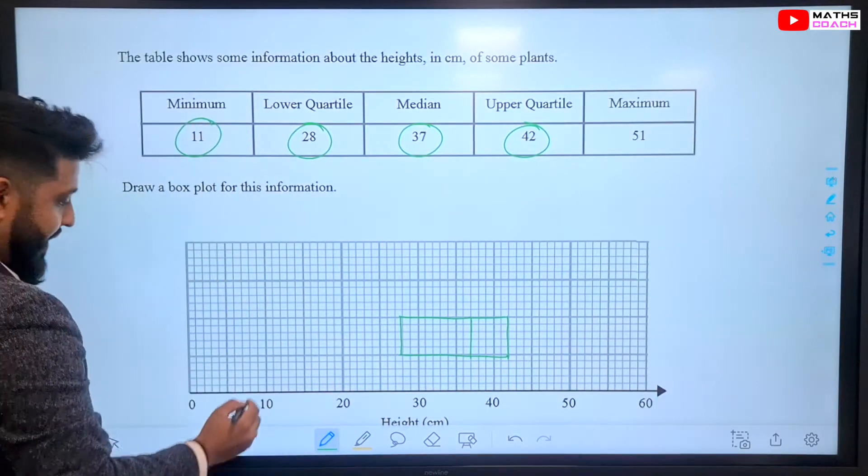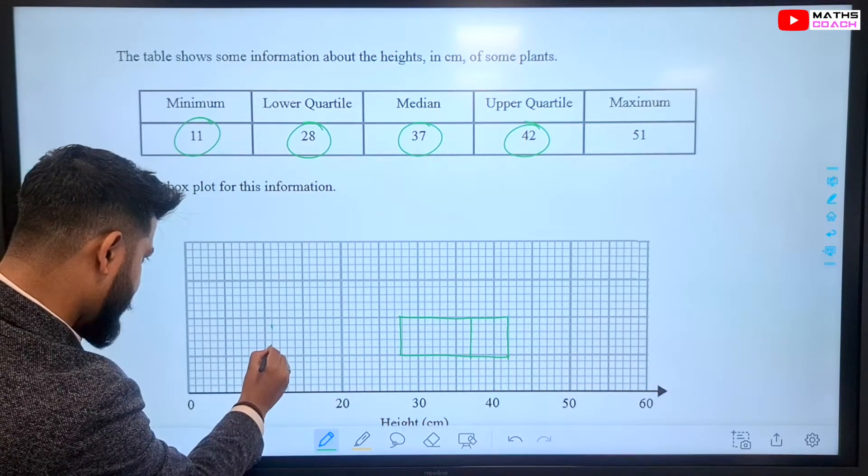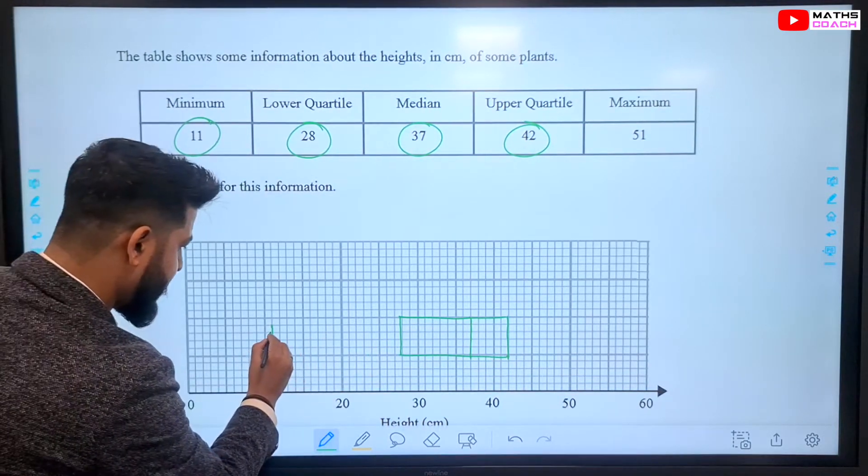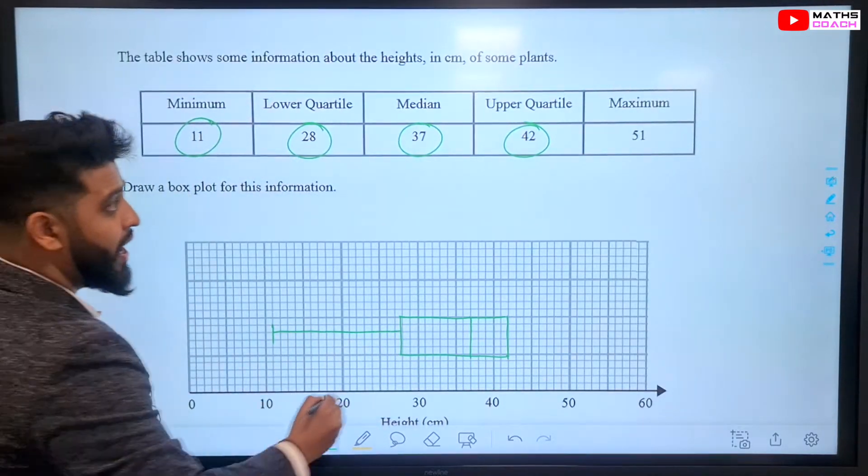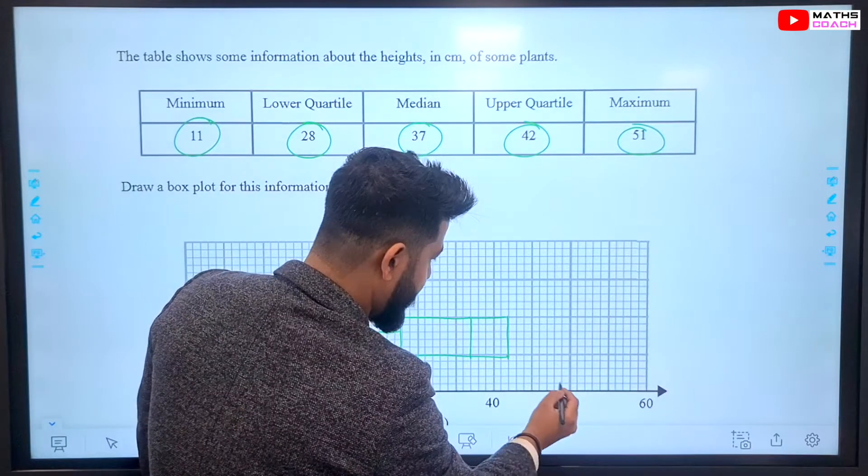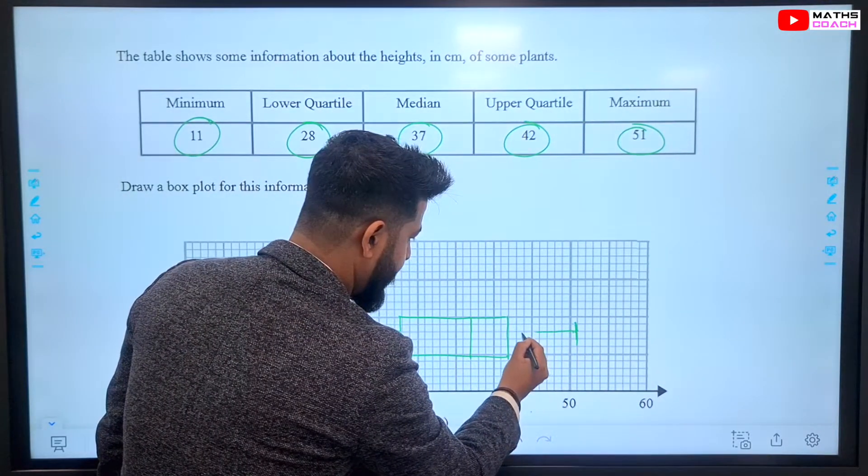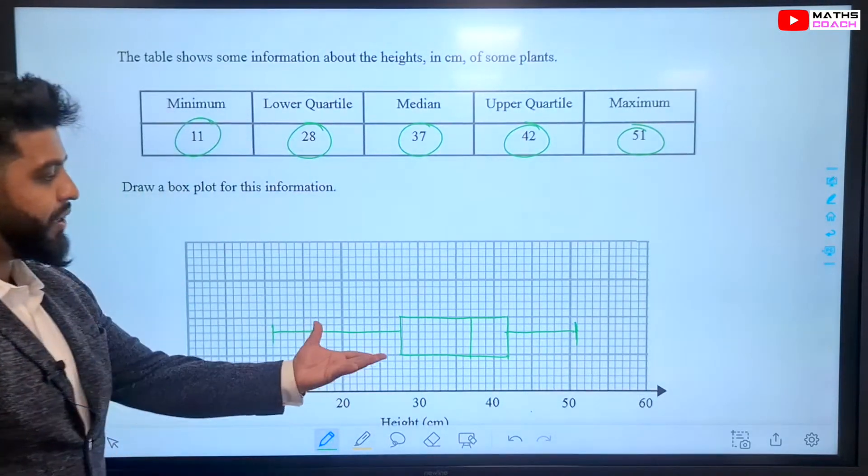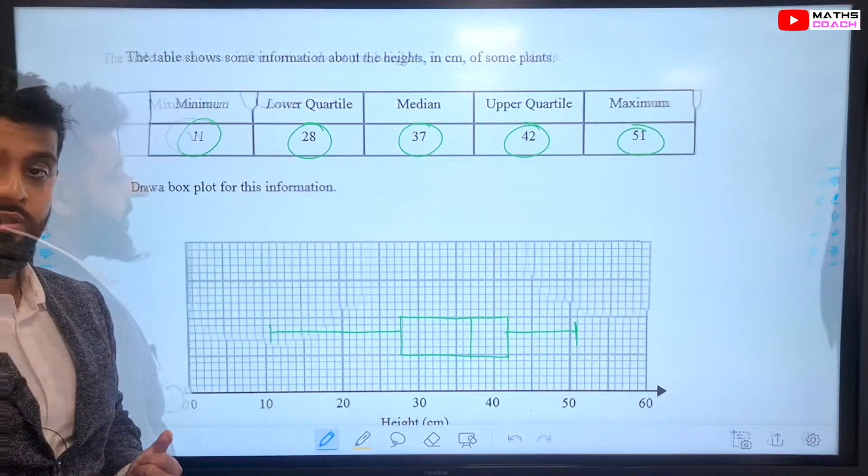Finally, our minimum value is 11. So, 11 is right here. It's going to be a smaller line than the others. I'll just join it up with a line to meet the box. And then, 51 is our maximum. So, 51 right there. And we just join like this. And here we have constructed our box plot based on data that's been given to us.